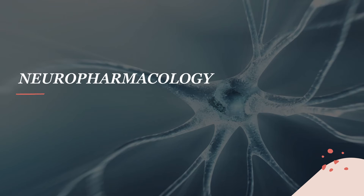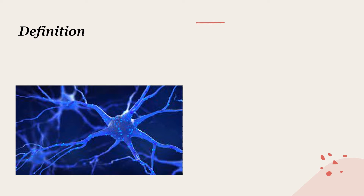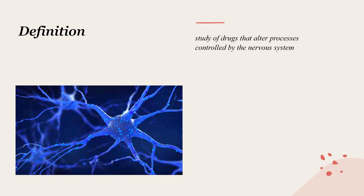Our topic for today is neuropharmacology. Neuropharmacology can be defined as the study of drugs that alter processes controlled by the nervous system. They are divided into two broad categories: first, the peripheral nervous system drugs, and second, the central nervous system drugs.